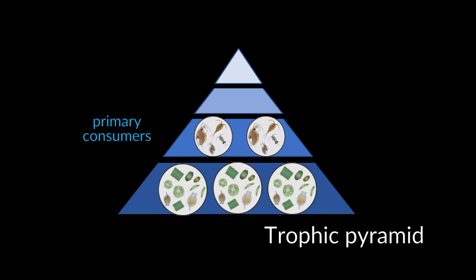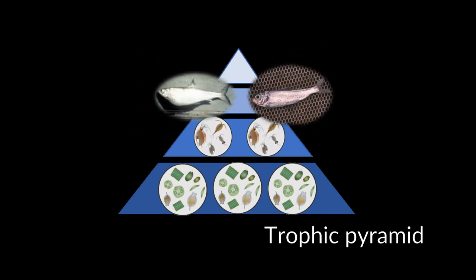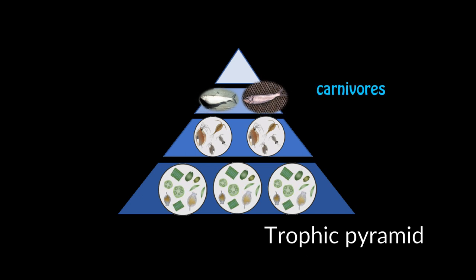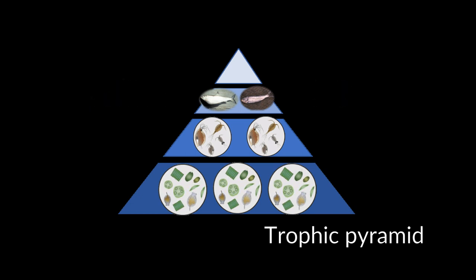You can also think of primary consumers as herbivores. Next comes secondary consumers, which includes forage fish and some macroinvertebrates, like insect nymphs, that feed on the zooplankton. These organisms would be the first level of carnivores, or if they eat a mix of primary producers and primary consumers, then they are omnivores. Some forage fish examples in the Great Lakes include cisco, yellow perch, alewife, and smelt — the last two being invasive species. Forage fish are also known as prey fish.